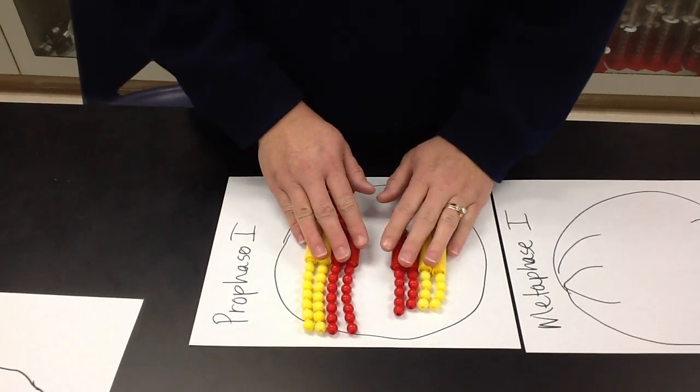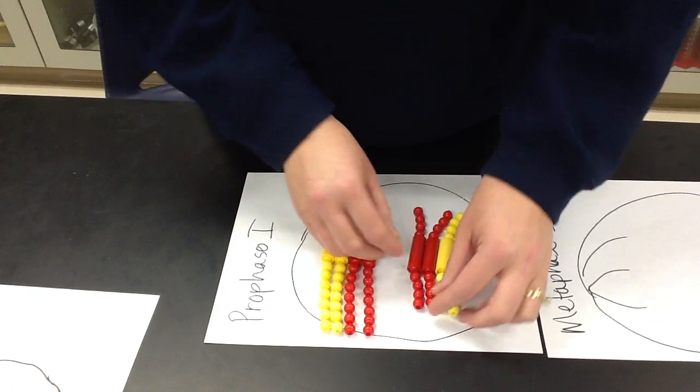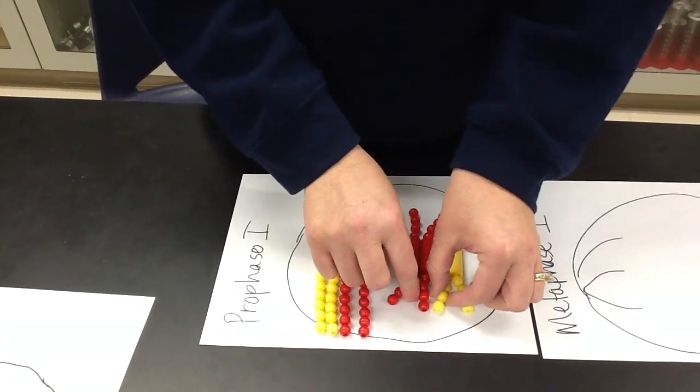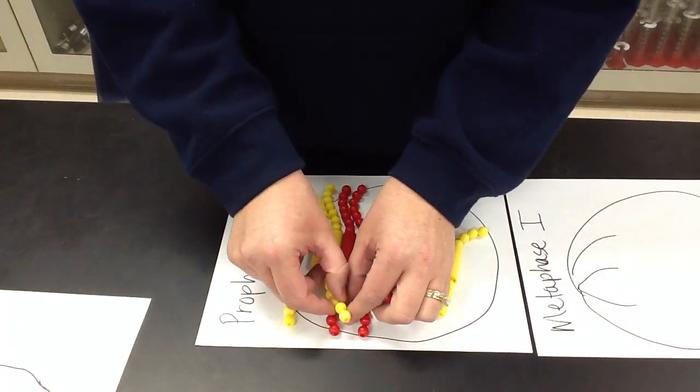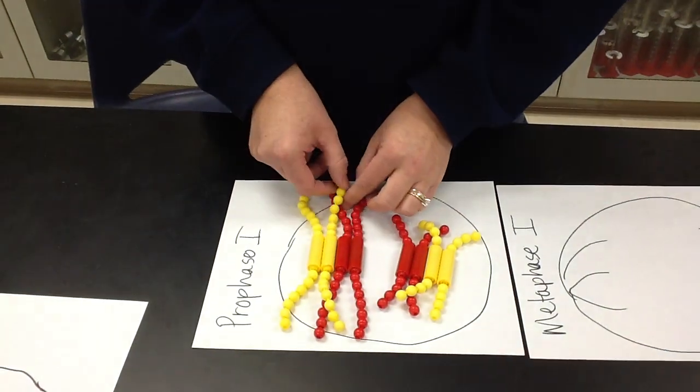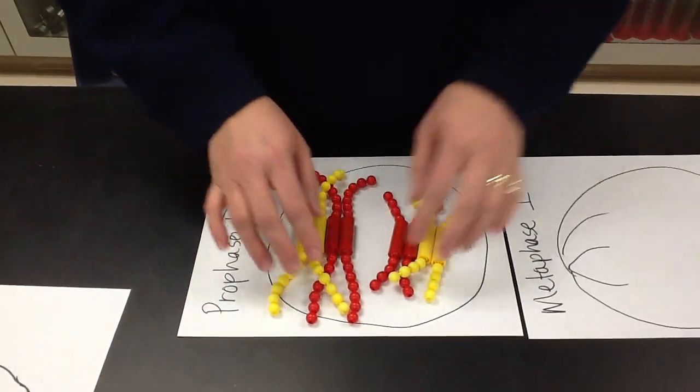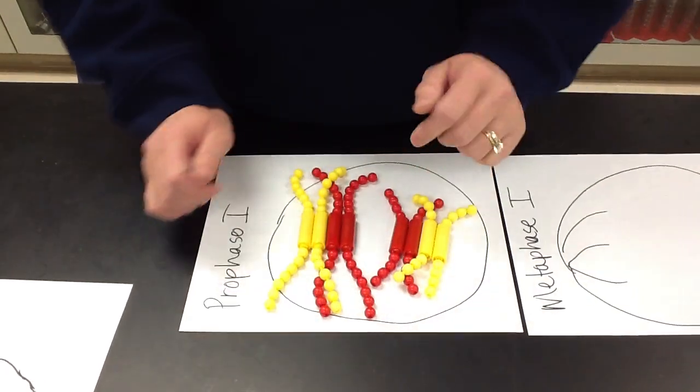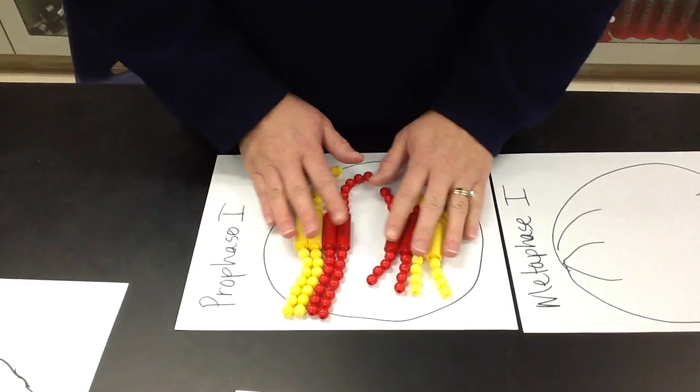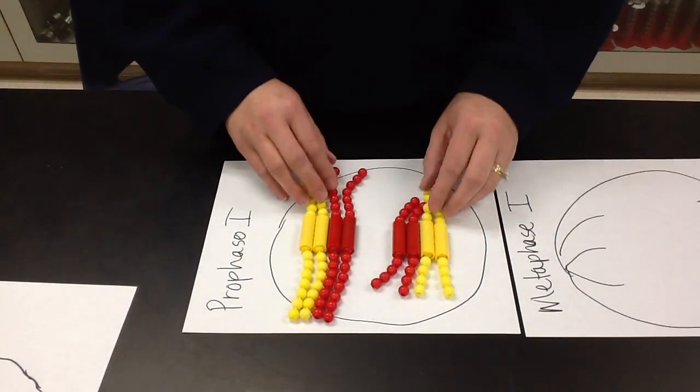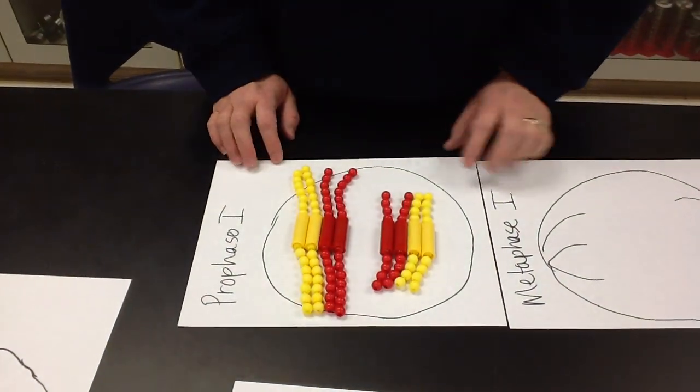Also in prophase, what would take place would be crossing over. Crossing over would take place between the sister chromatids that are closest to each other in the tetrads. I'm not going to cross them over at this point, but they would exchange genetic information. So that happens all in prophase one. Our tetrads are ready, our nuclear membranes disappeared, our spindles have appeared, and our centrioles have appeared.